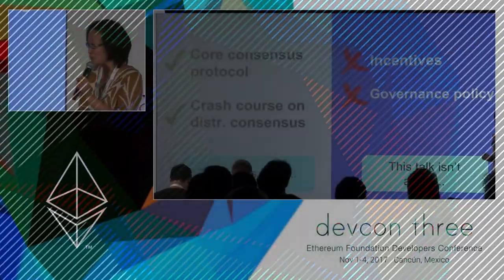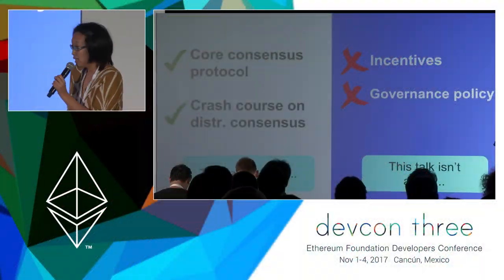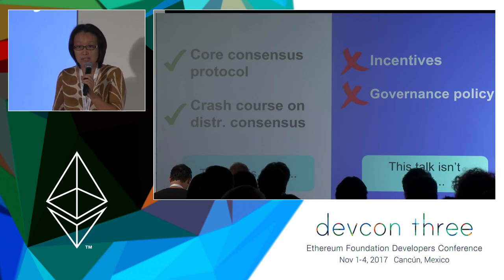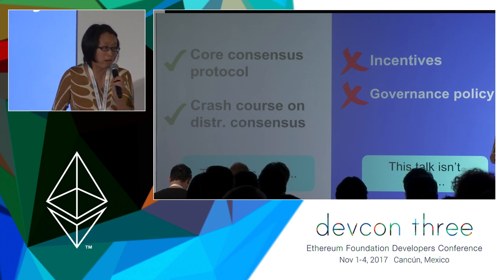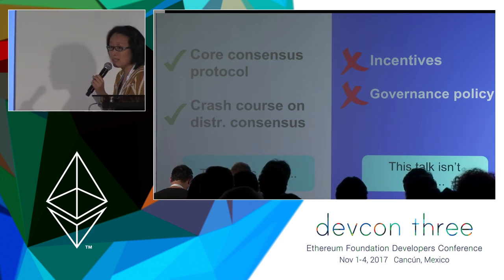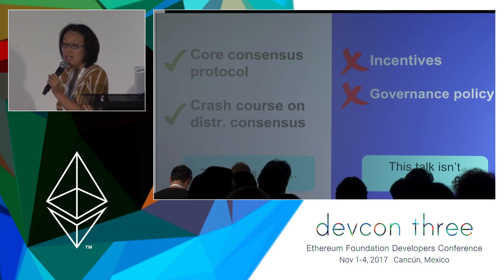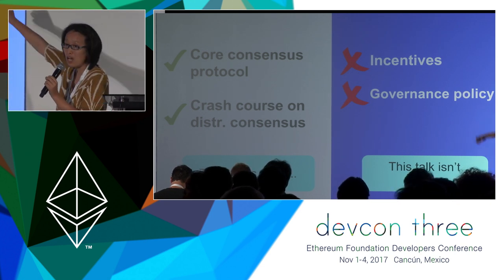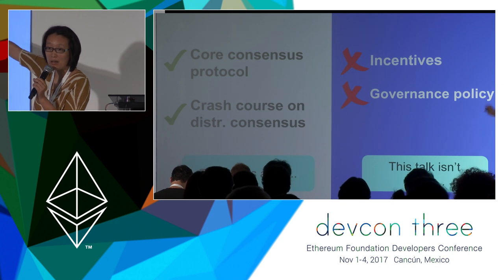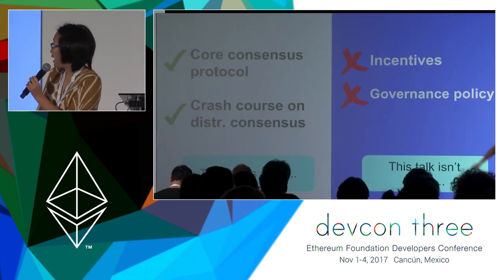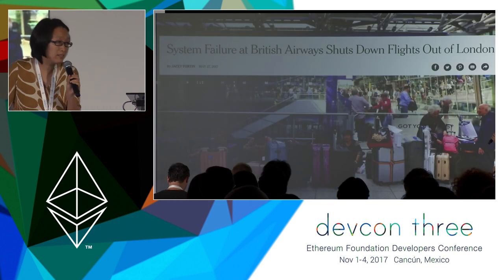You have learned something about distributed consensus, and it takes a lot more than just the consensus protocol to build a cryptocurrency. We need to make sure that the incentives are aligned and there's good governance policy. In the interest of time, I'm not going to be able to cover these other topics in this talk. So let's begin.